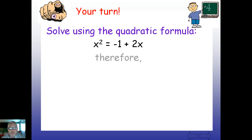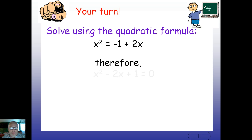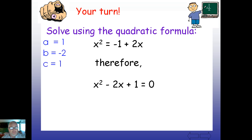Your turn — take a look at this one: x² = -1 + 2x. Go ahead and move the 2x over and move the 1 over and set it equal to 0. From there, identify a, b, and c. Once you've done that, go ahead and hit pause and work out that quadratic equation on your own using the formula. I'll be right back with you.